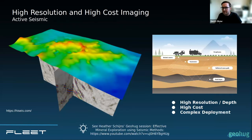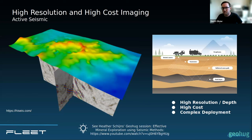On the other end of the scale, you've heard about active seismic imaging. Heather Shines did a really nice geo-session last year about effective mineral exploration using seismic methods — go check that out if you haven't. Active seismic has been used a lot in the oil and gas industry and has some nice use cases in mining, but there are limitations. First is cost — cost per square kilometer or cubic kilometer can be quite expensive, and it's very difficult to deploy in remote or environmentally sensitive areas.